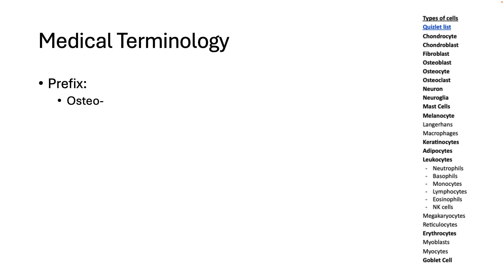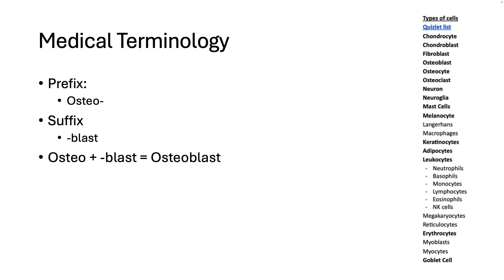Changing the suffix changes the type of cell we're talking about. We can use 'osteo' still, but this time we're going to use '-blast' as our suffix. A blast is a cell that builds — it secretes the matrix of that tissue. So an osteoblast is a bone cell that builds bone. We can substitute in 'chondro' to get a cell that builds cartilage. 'Fibro' means fibers, so a fibroblast is the type of cell that builds connective tissue, which is made out of fibers. And a myoblast is a type of cell that builds muscle.